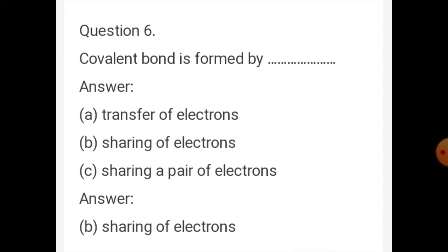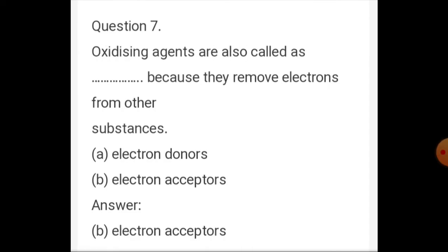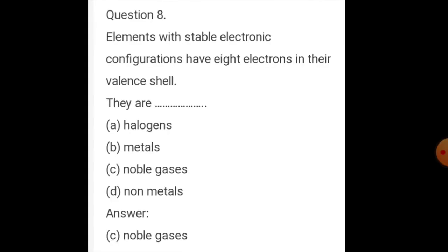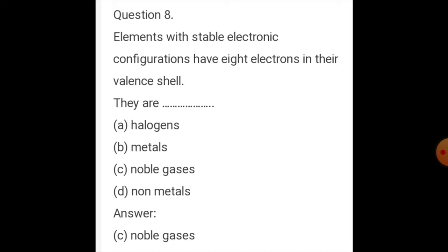Question number 6: the covalent bond is formed by — transfer of electrons, sharing of electrons, or sharing a pair of electrons. The correct option is the sharing of electrons. Question number 7: oxidizing agents are also called as — because they remove electrons from others — the correct option is electron acceptors. Question number 8: the elements with stable electronic configuration have eight electrons — they are noble gases.